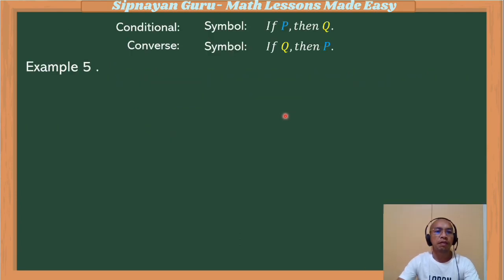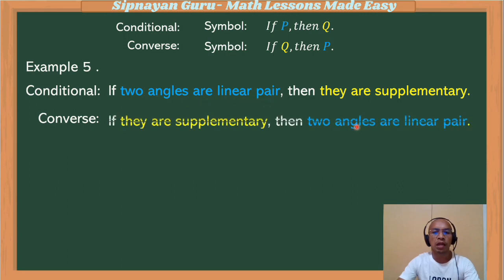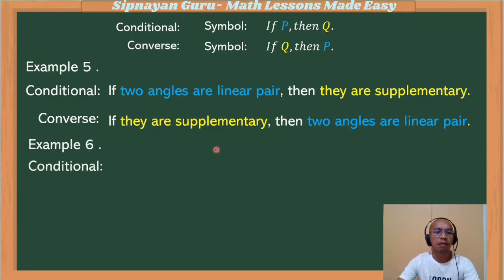Example: if two angles are a linear pair, then they are supplementary. To determine its converse, we switch the conclusion and the hypothesis. In our conditional statement, two angles are supplementary is the conclusion, and they are a linear pair is the hypothesis. So our converse would be: if they are supplementary, then the two angles are a linear pair.